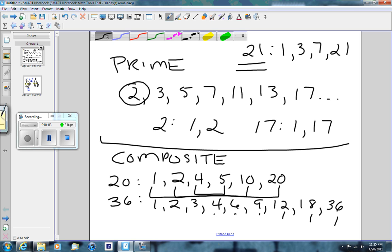24. All right, so go back here. 24. Factors of 24 are 1, 2, 3, 4, 6, 8, 12, 24.